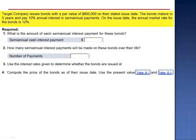Exercise 9. Target Company issues bonds with a par value of $800,000 on their stated issue date. The bonds mature in 5 years and pay 10% annual interest in semi-annual payments. On the issue date, the annual market rate for the bonds is 12%. Now it's important here to predict what's going to happen with this bond.